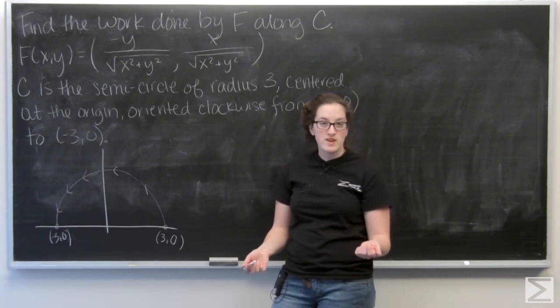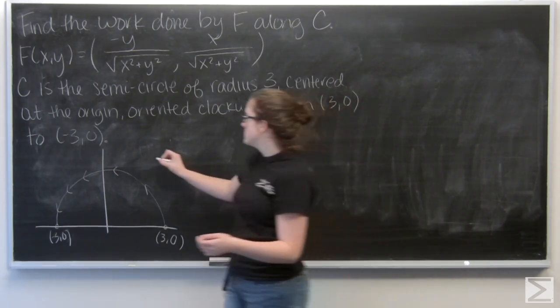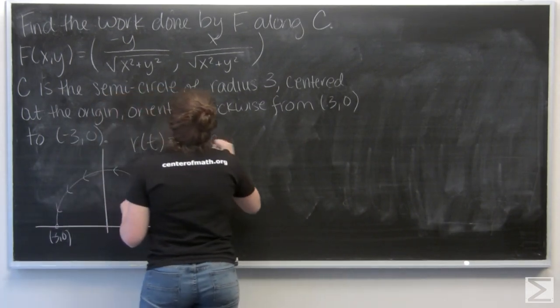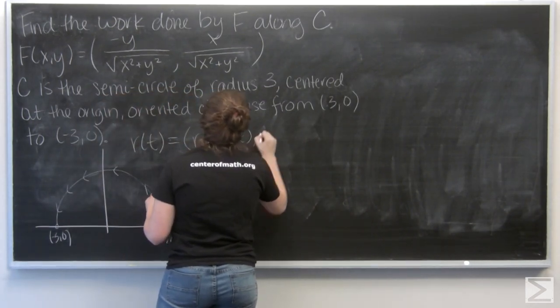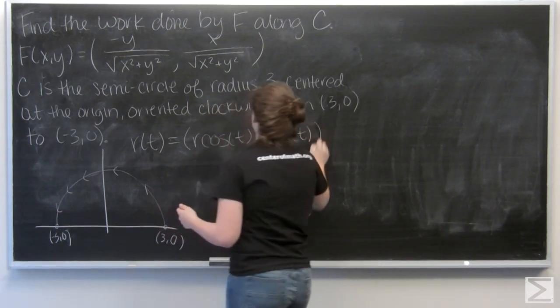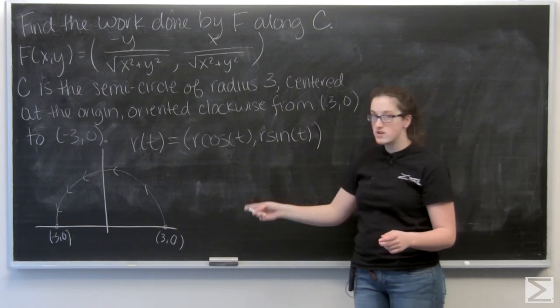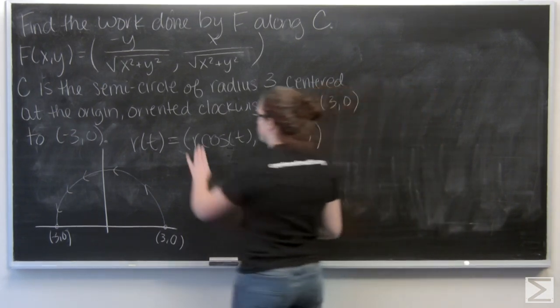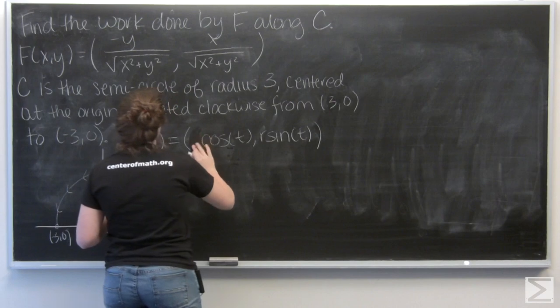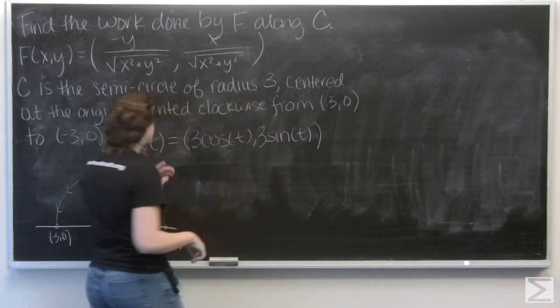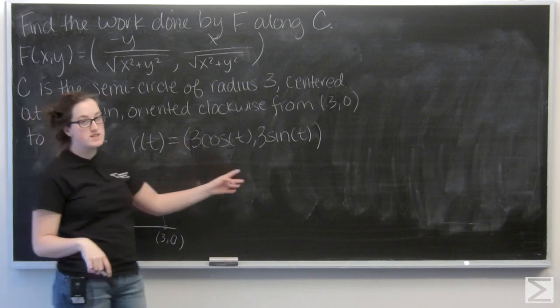Well, you might remember, the way to parametrize a circle is r cosine t and r sine t. So here I can plug in r, which is 3, to say that my curve is given by (3 cosine t, 3 sine t).